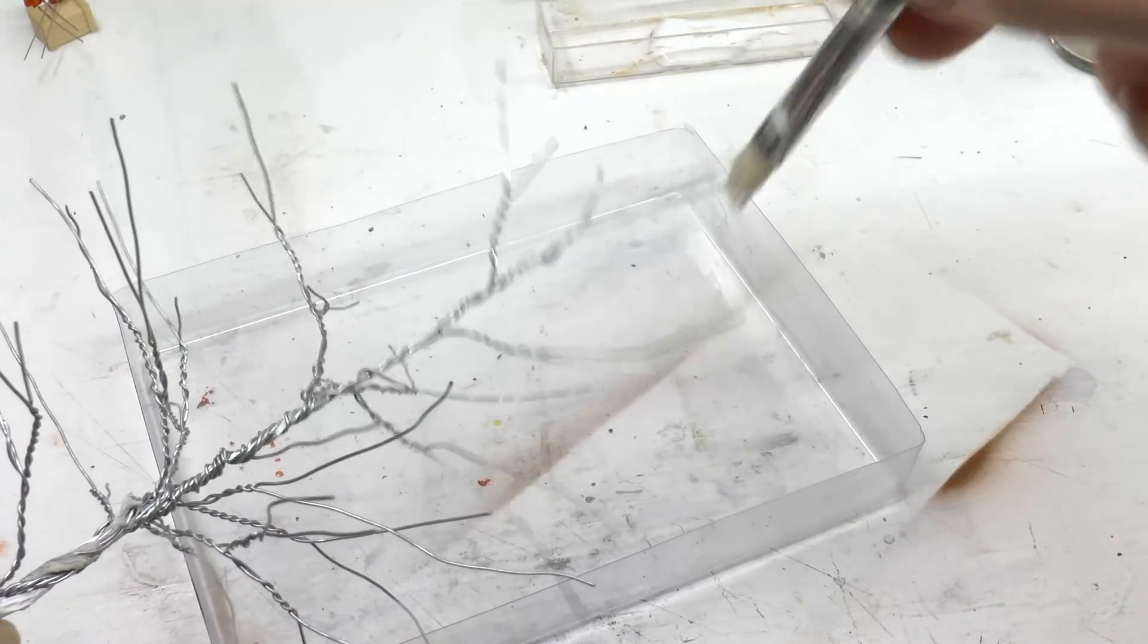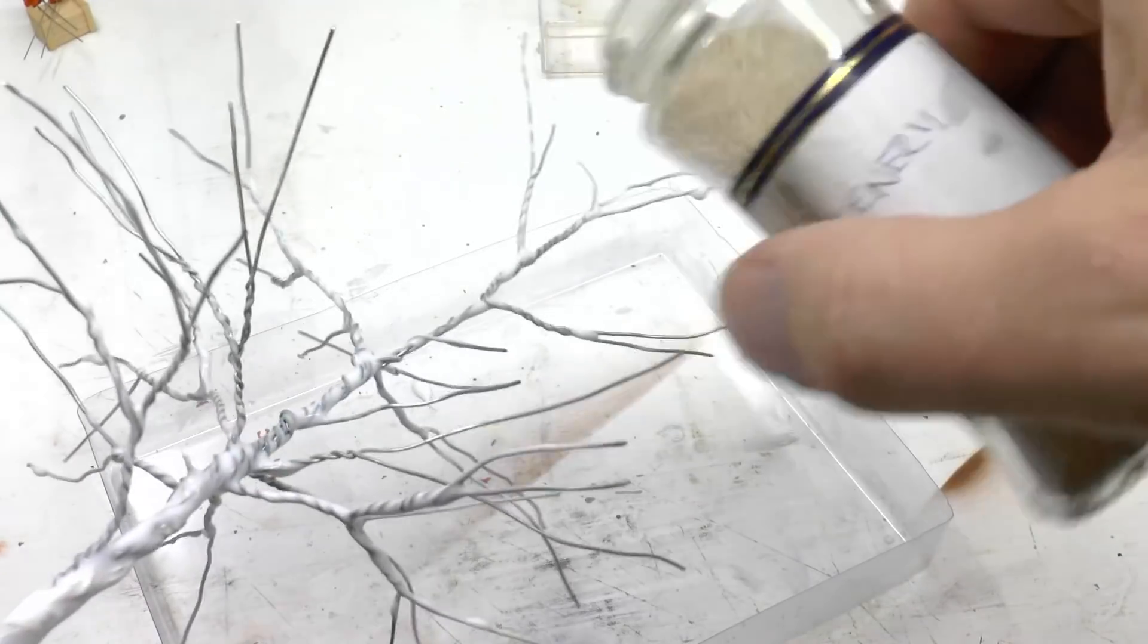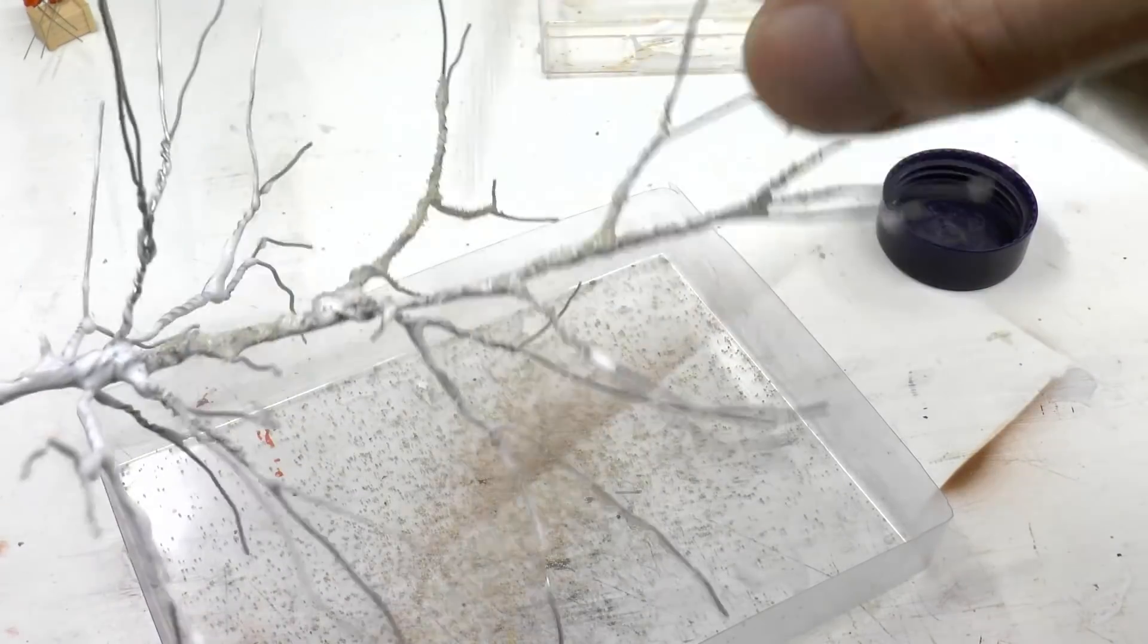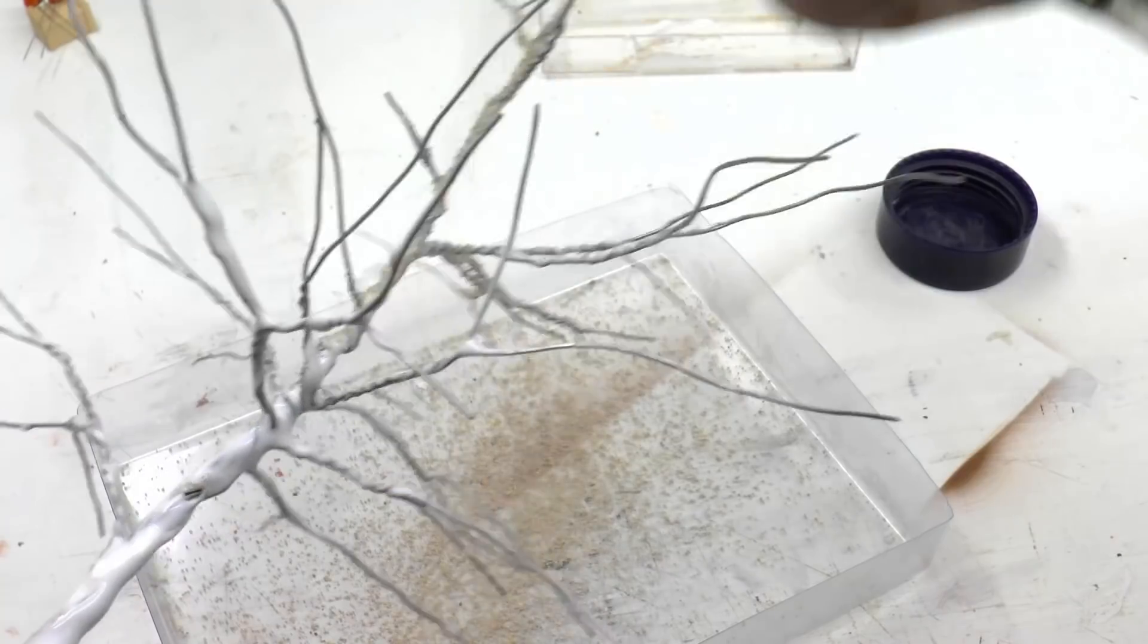And as always I just make a basic covering using a PVA glue. Then I sprinkle chinchilla sand over the entire tree. Chinchilla sand is found in the zoo shop.